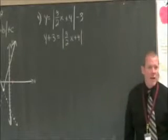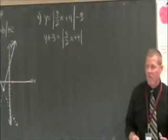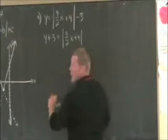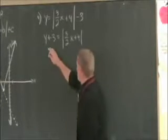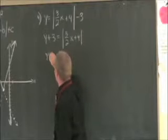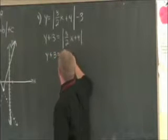Now that the absolute value is isolated, we're going to use the definition of absolute value to write two separate equations. The first one looks just like this without the absolute value signs. y plus 3 equals 3 halves x plus 4.